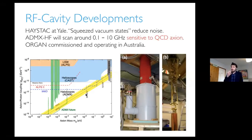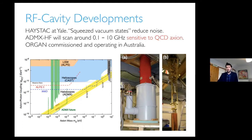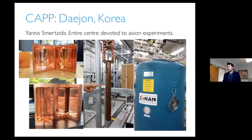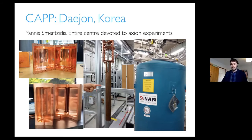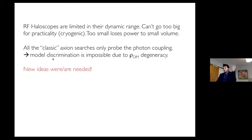This approach has been pursued by a number of groups using different cavity technologies — for example, the HAYSTAC high-frequency cavity using quantum techniques for squeezed states to reduce noise further, and ADMX has plans for similar things. There's also a lot of cavity technology being developed at the Center for Axion Precision Physics in Daejeon in Korea, with a large number of cavity designs to extend the range. But you are fundamentally limited by volume: you can't go too big because you can't have very large magnetic fields, and you can't go too small due to insufficient dark matter volume.